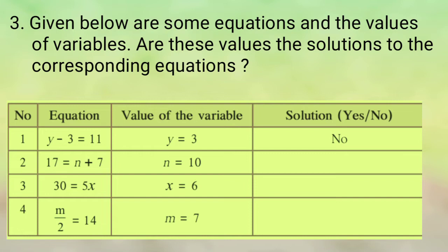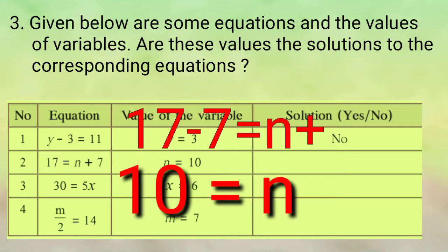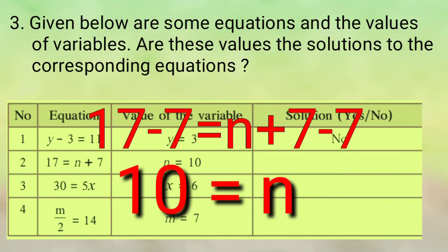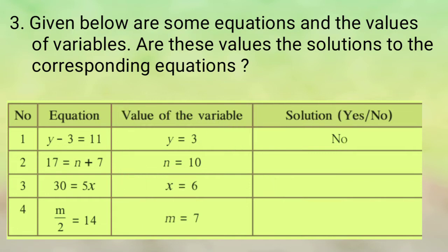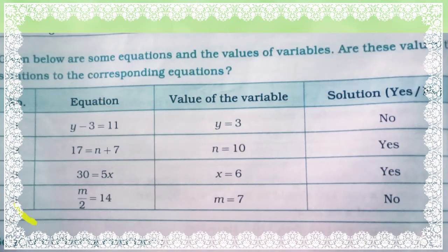Let us look at: 17 is equal to n plus 7, and n is equal to 10 — is the answer yes? Yes. Because both sides have been subtracted by 7. So 17 minus 7 is equal to 10, which means n is equal to 10. Likewise, for the next variable, 30 is equal to 5x — we will divide both sides by 5. The answer is x is equal to 6, so yes.